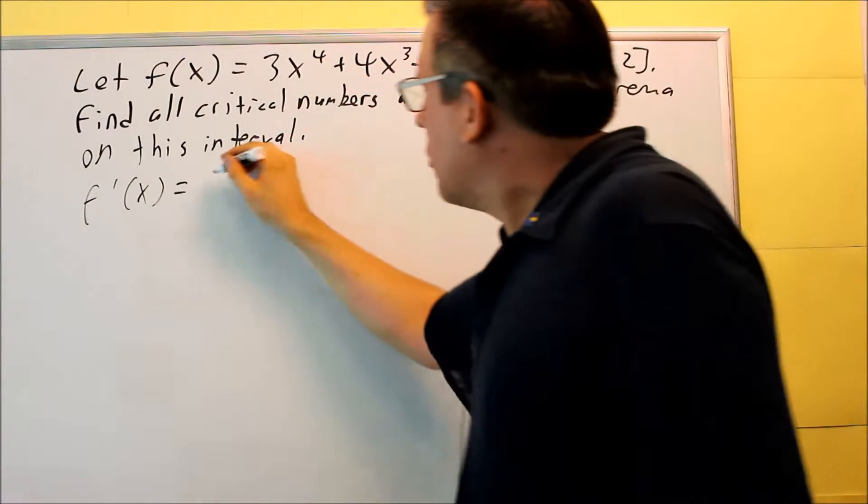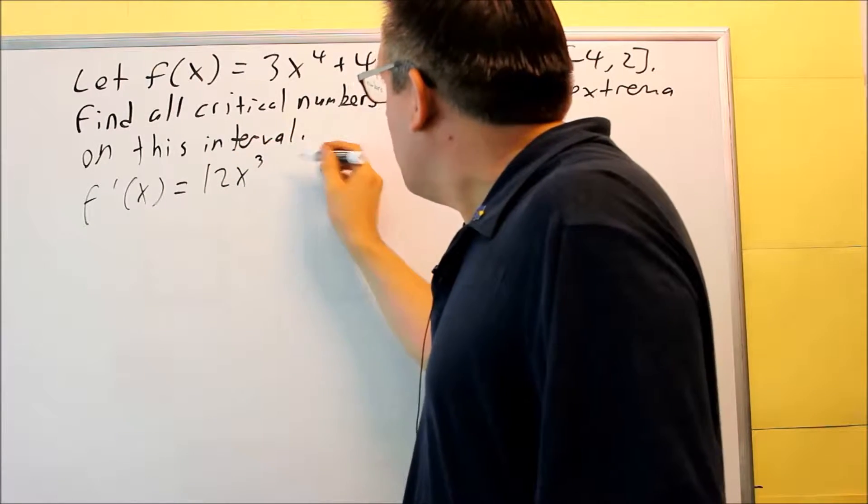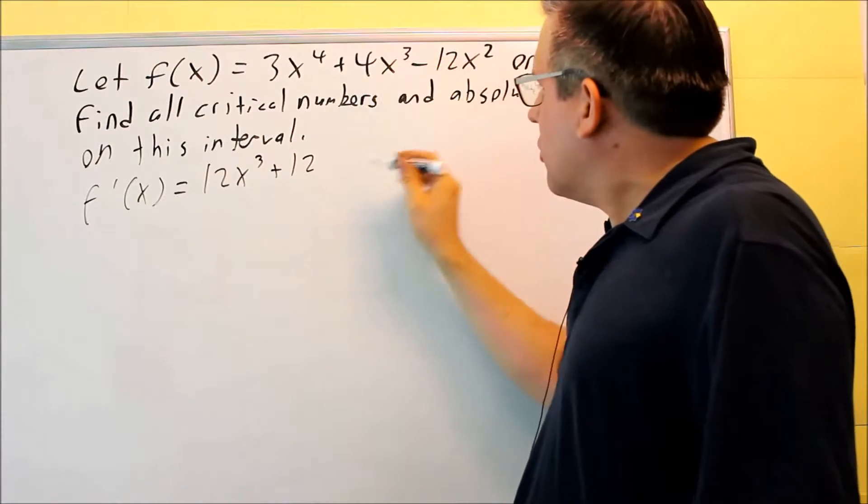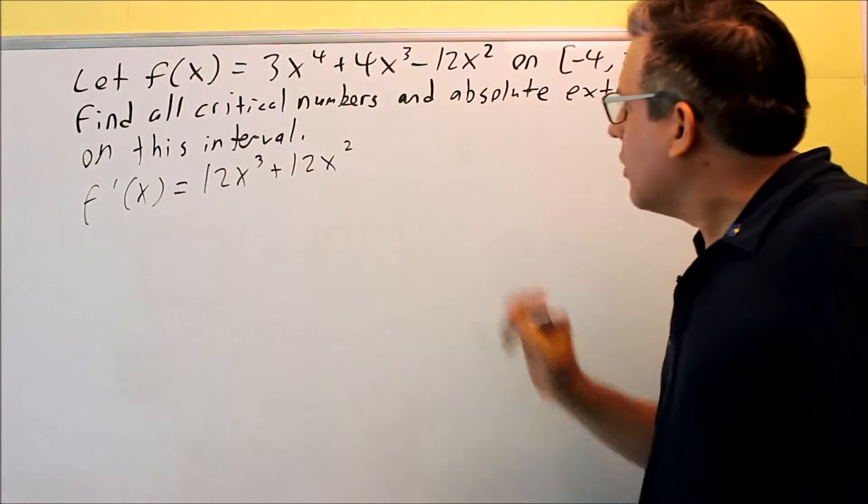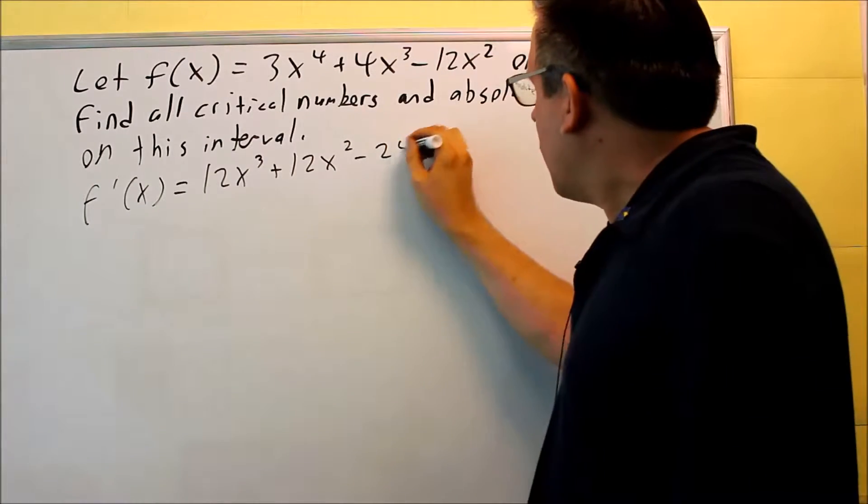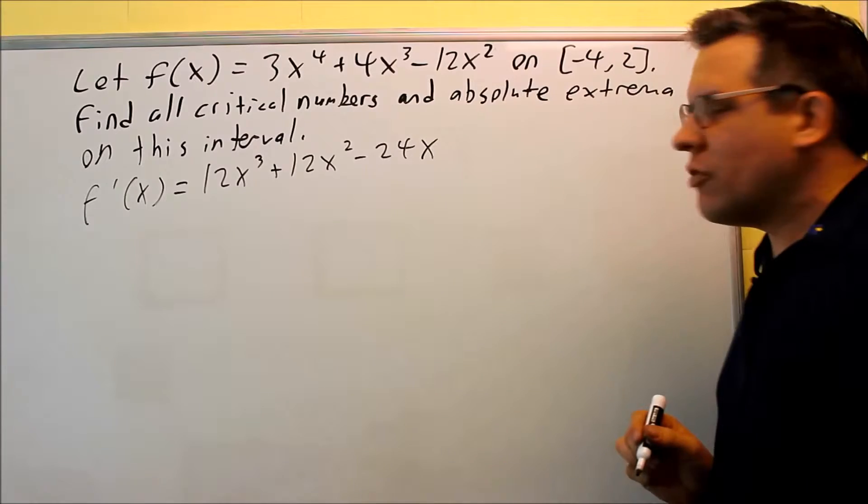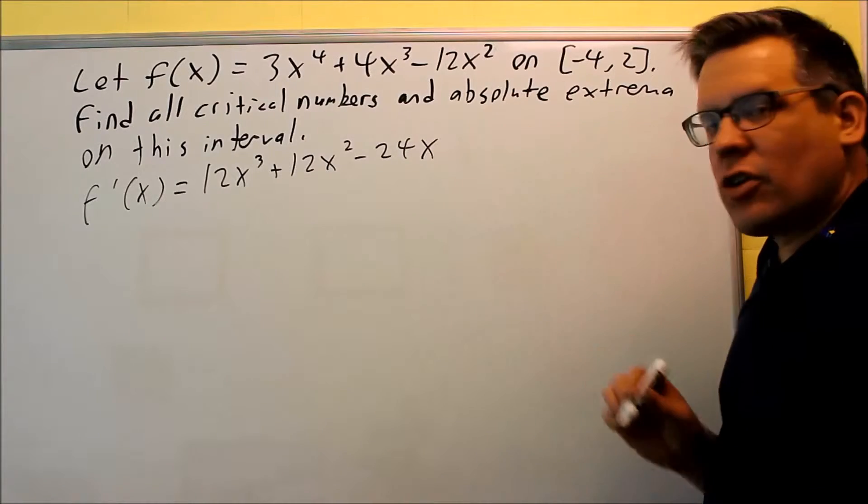We'll bring the four down, 12x cubed, and then 12, multiply those, x squared, and this one comes down, minus 24x to the first power. That's the first derivative.